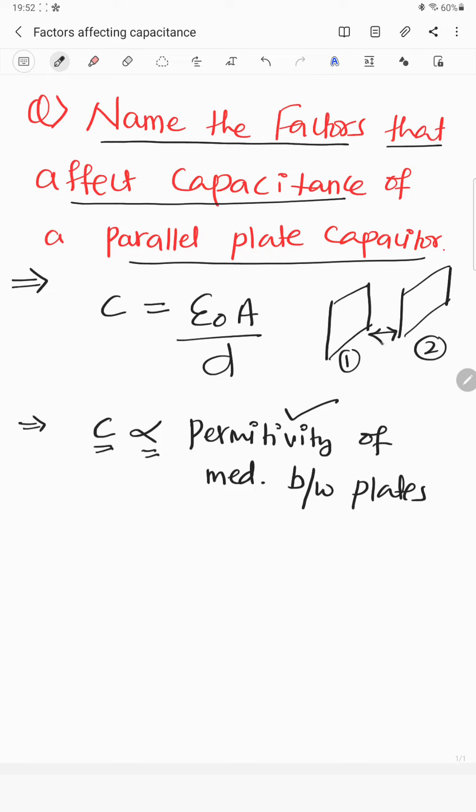So whatever medium is there between these plates, based upon this, the capacitance is dependent. Now what is the second thing? So whatever this capacitance is, that is directly proportional to area of plates. Look at this, you can see it in the numerator. So it is dependent on area of the plates also, right?